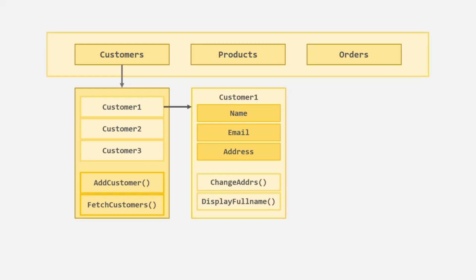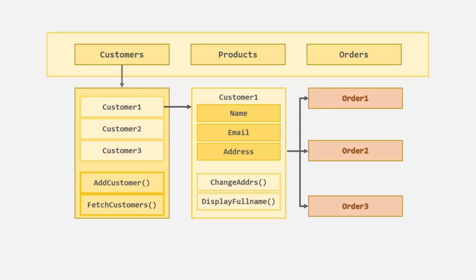Each customer might have made some orders, so order is another entity which can be represented as an object, and there can be a relation between a customer and the orders they have made. So using object-oriented programming, we basically represent real-world entities using objects. A customer can be an object, an order can be an object, a product can be an object. Each object will have some properties and methods. Properties represent the state of the object and methods represent the behavior of the object.